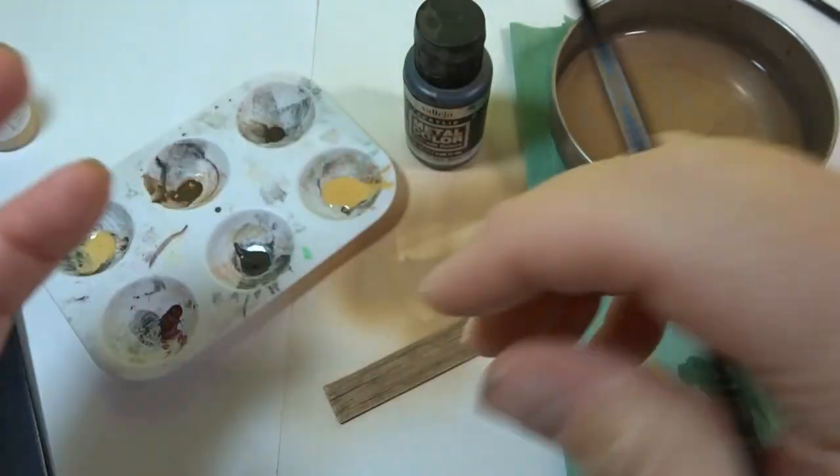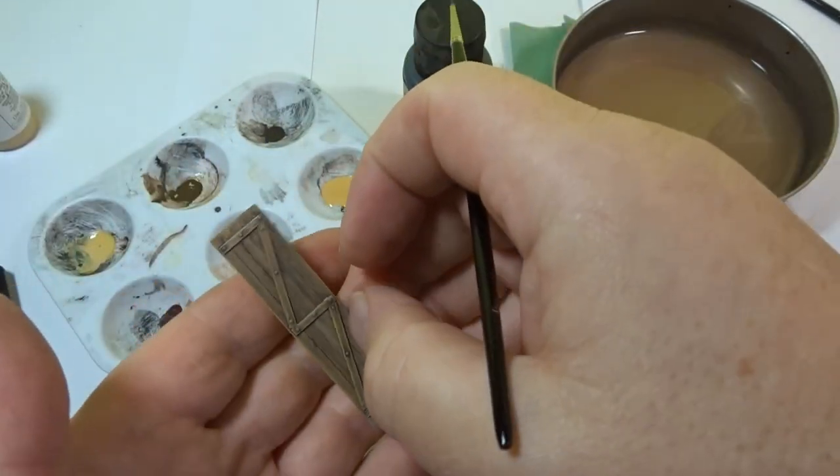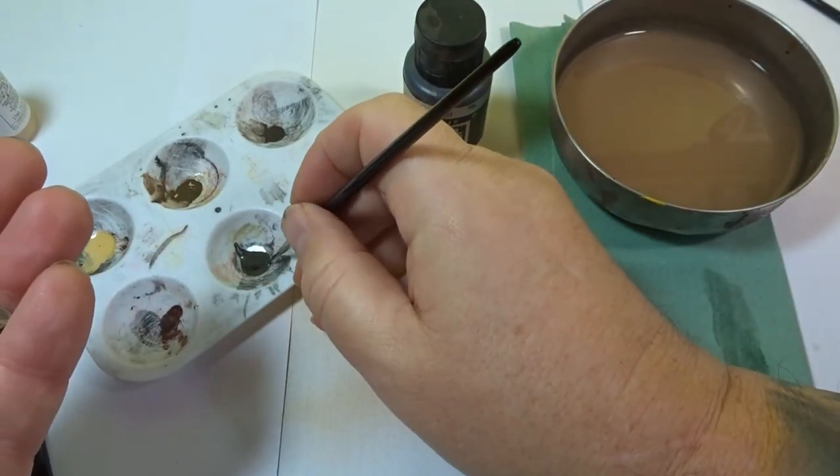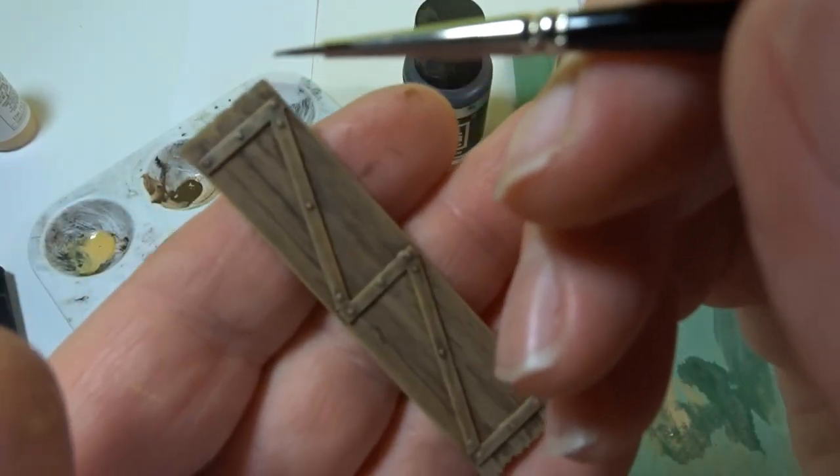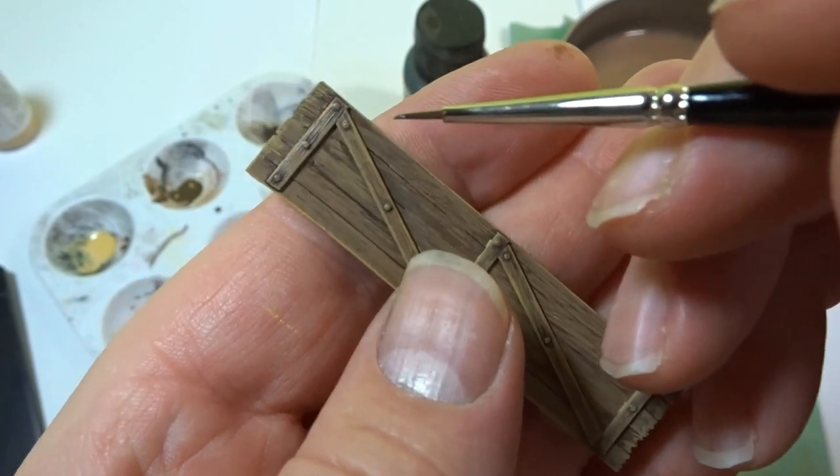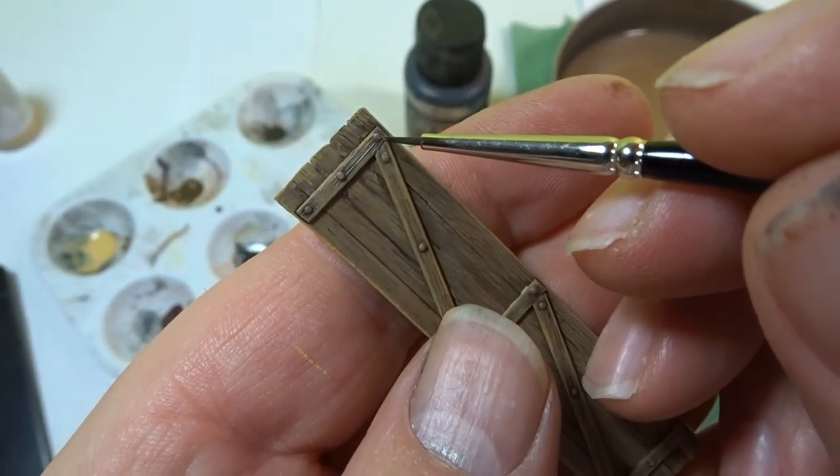And then we'll do the rivets using a bit of Vallejo burnt iron or any type of dark metallic paint that you may well have. And just very carefully paint each one of those rivets.